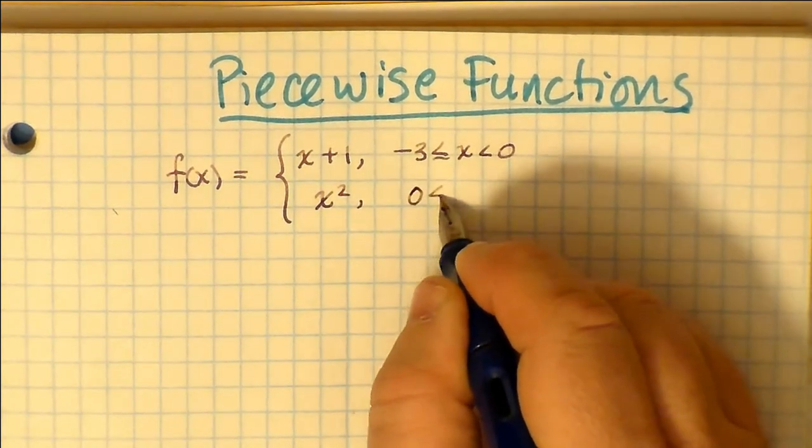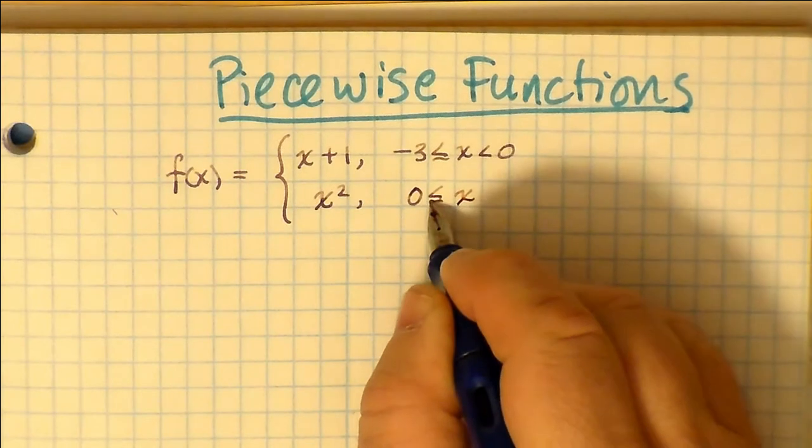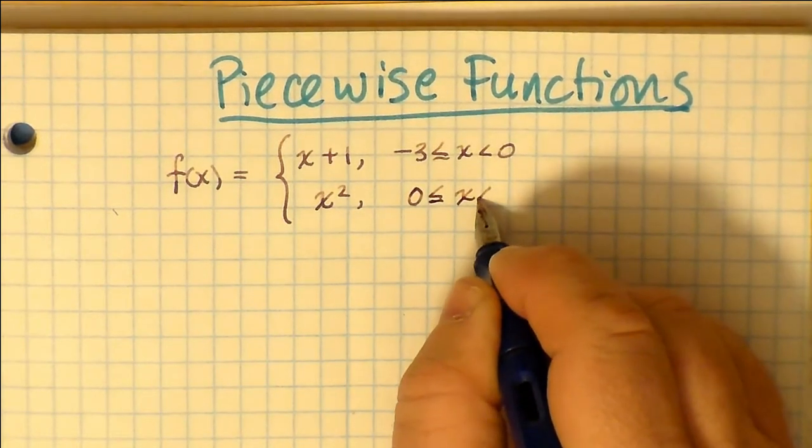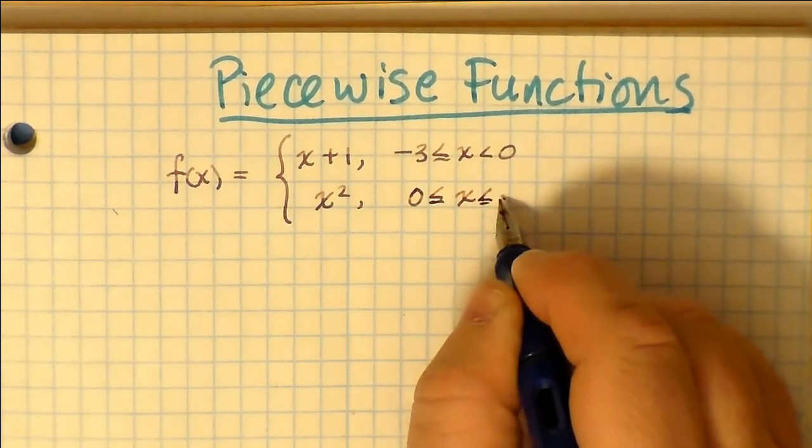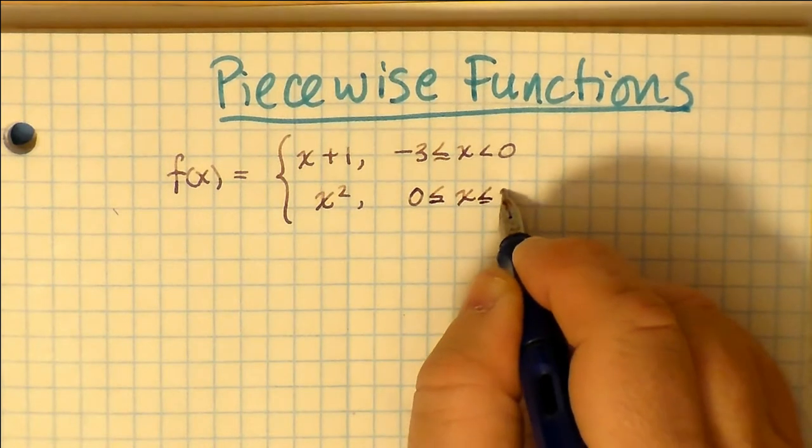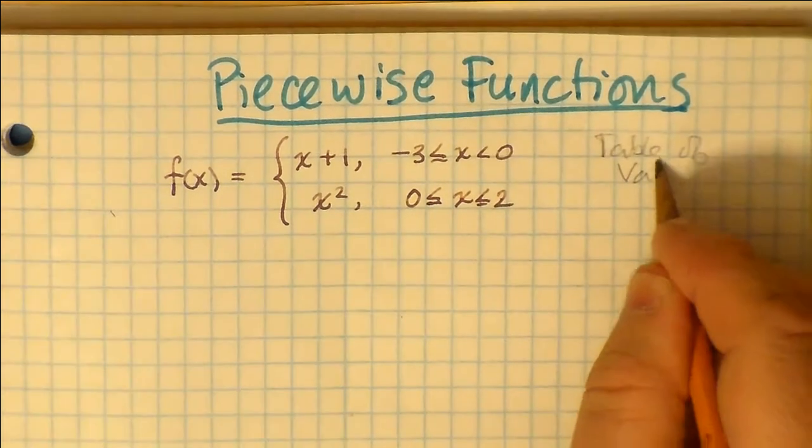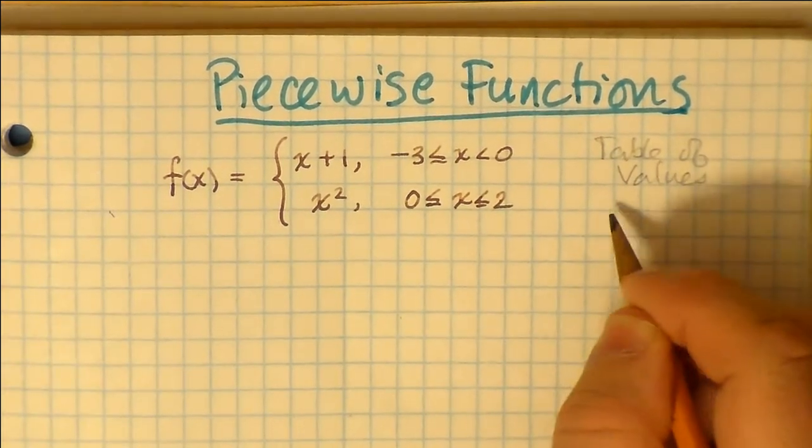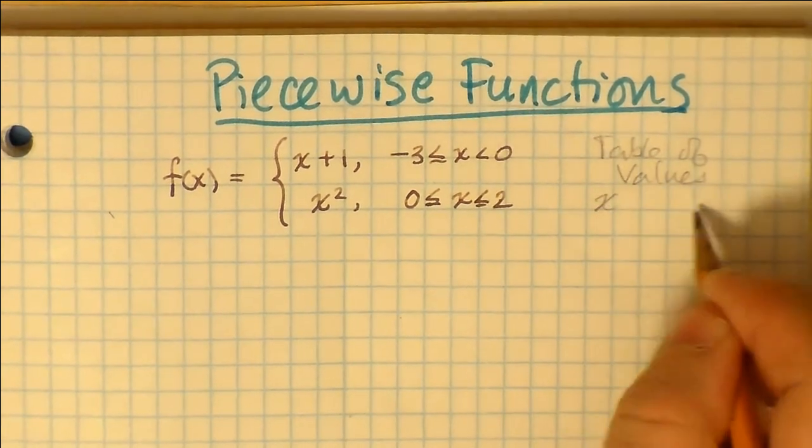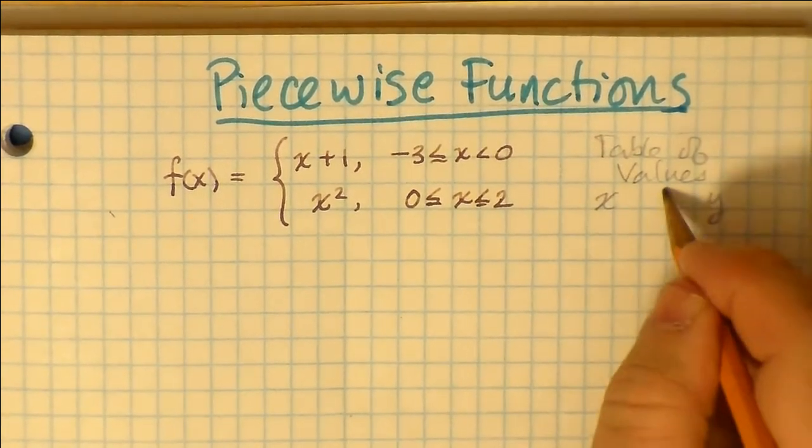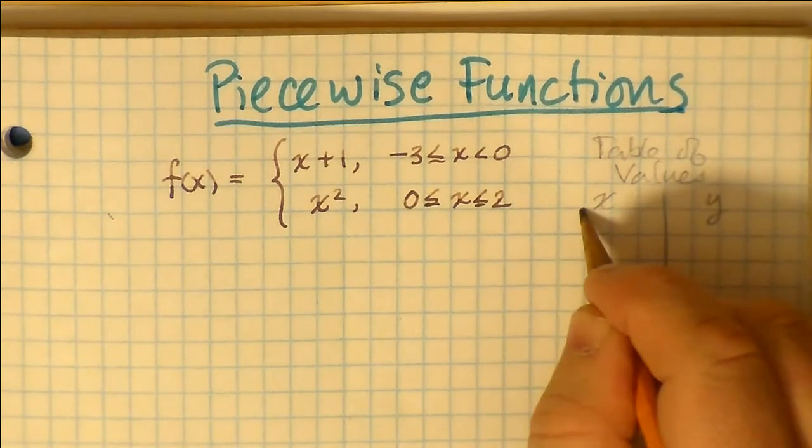Welcome to my discussion on piecewise functions, and this is the kind of function where it literally is in pieces. The first piece is x plus 1 in my example, and it's defined for the domain negative 3 to 0, not including 0 itself.